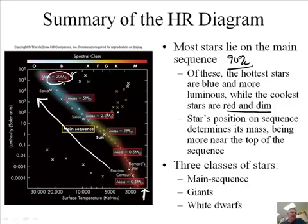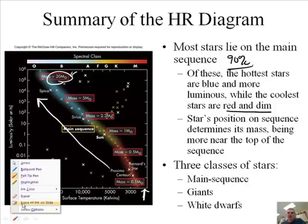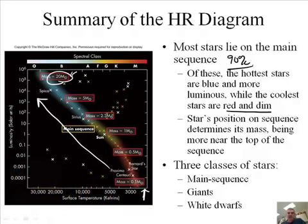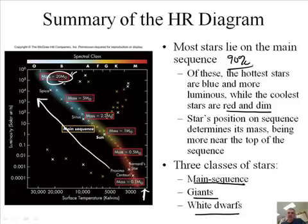There really are three main classifications of stars: of course, there are the main sequence stars, there are the giants, and then there are white dwarfs. We're going to get into more details in subsequent podcasts about the characteristics of those.